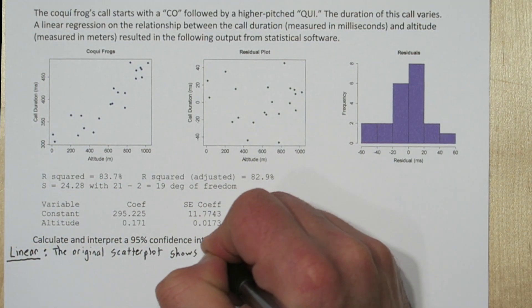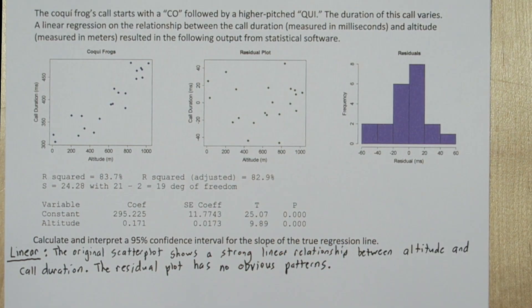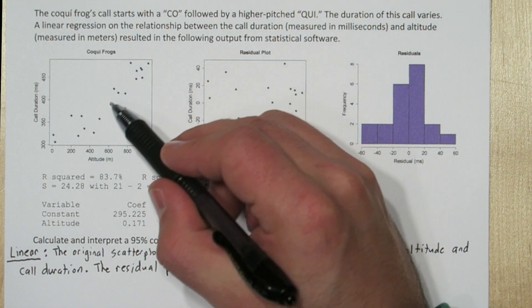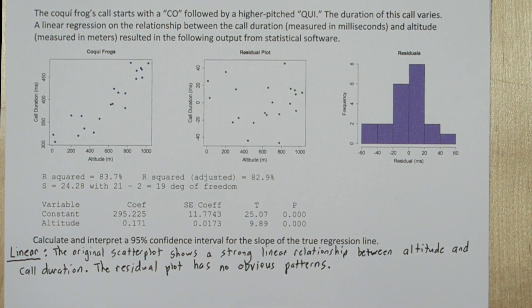Before we calculate our confidence interval, we have to check conditions. The first condition is the linear condition. If we look at the original scatter plot, we see a strong linear relationship between altitude and call duration, so that's a good thing.